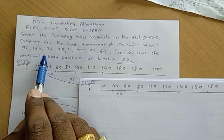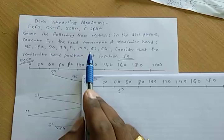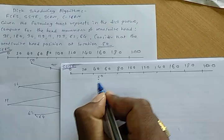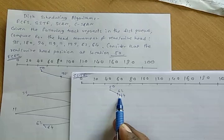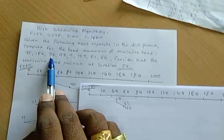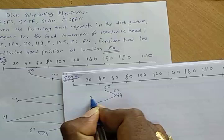On the left side is 34, and on the right side is 62. The nearest track is 62 because from 50 to 62 only 12 tracks are required, while from 50 to 34 there are 26 tracks required. So we consider the shortest seek time: from 50 the next nearest is 62, then from 62 the next nearest is 64. From 64, the left side seek time to 34 is 30, and for 95 it is 31, so the shortest seek time leads to 34.